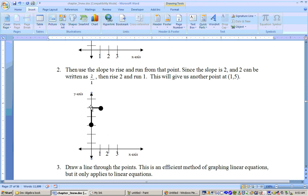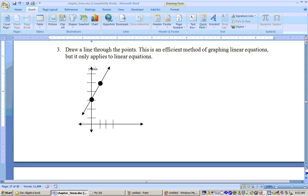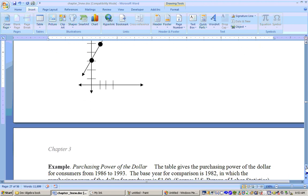rise 2 from that. That takes you up to 5 and run 1 because it was 2 over 1. Rise 2, run 1. Once you have those two points, that's all you need to graph the line. Then just graph the line through it. And that's how you graph things by the slope-intercept method.